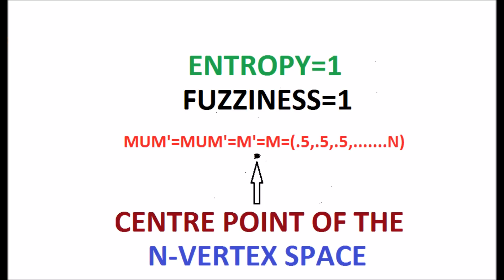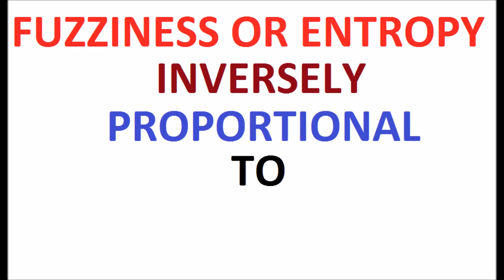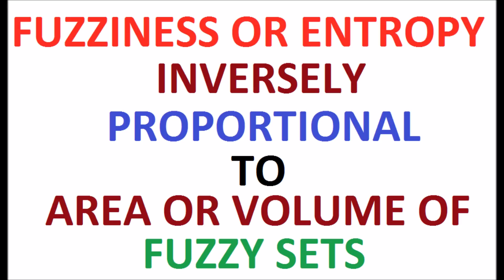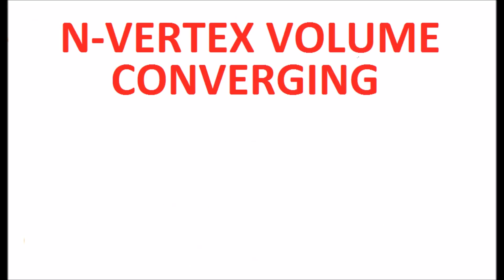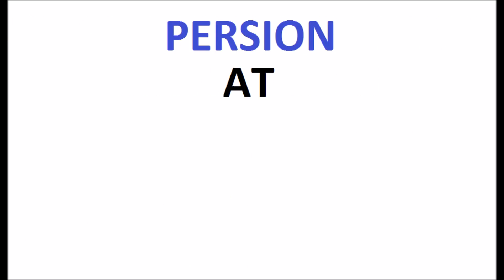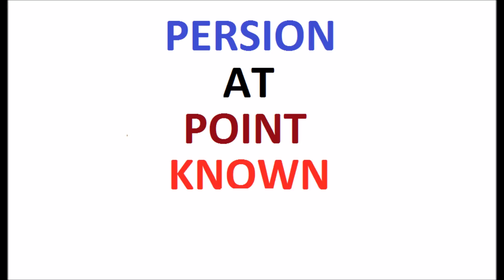As a conclusive remark, fuzziness or entropy inversely proportional to area or volume of fuzzy sets. Converging at a point proves that a person at this point is the responsible for all, known as God, where the uncertainty is maximum equal to 1.